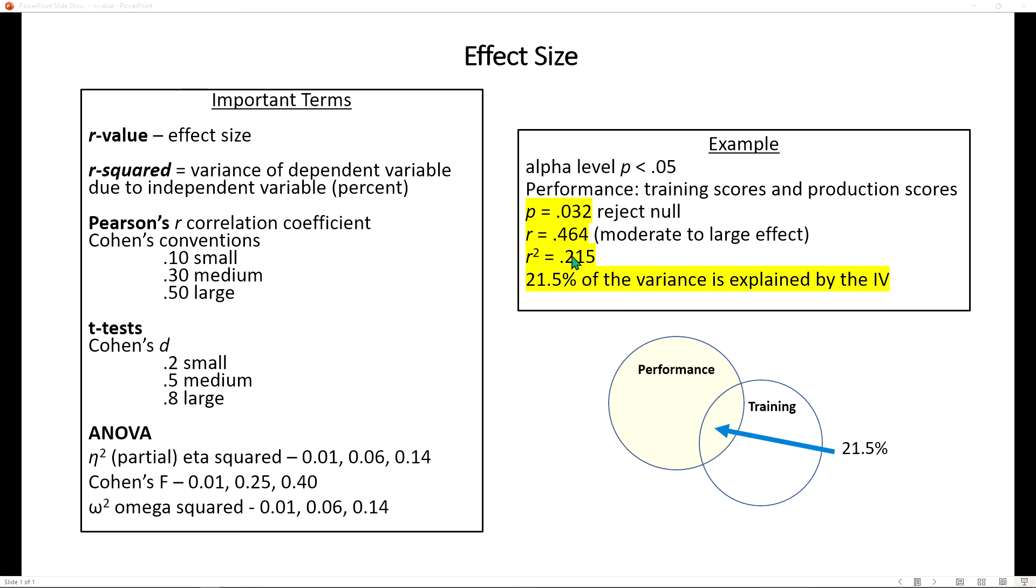Our R value is 0.464. That's our effect size. In this case it's a moderate to large effect based on Cohen's conventions.